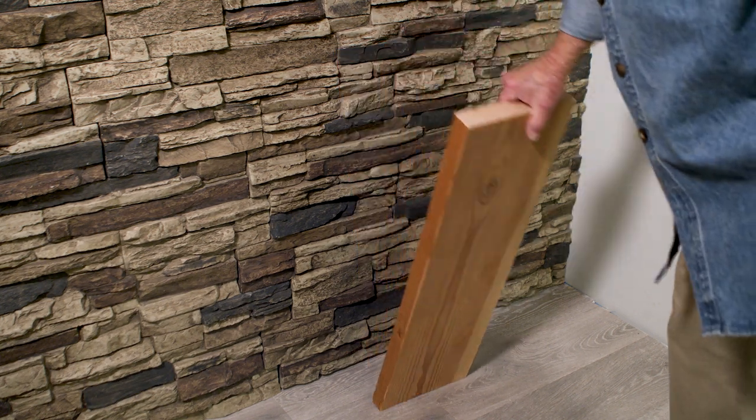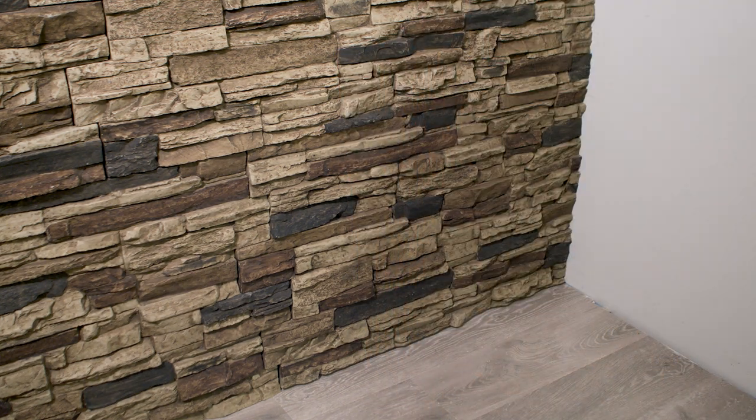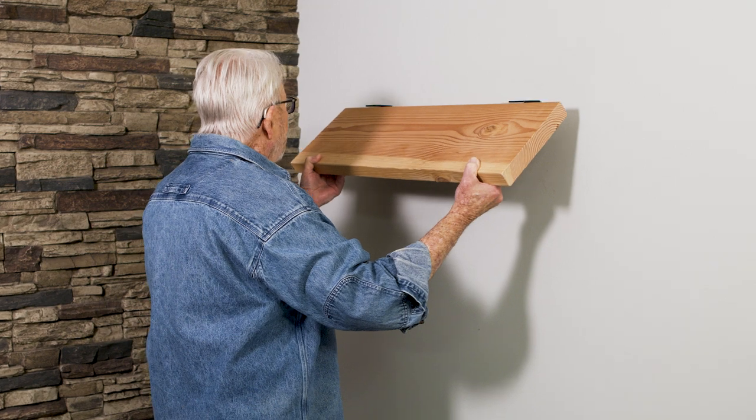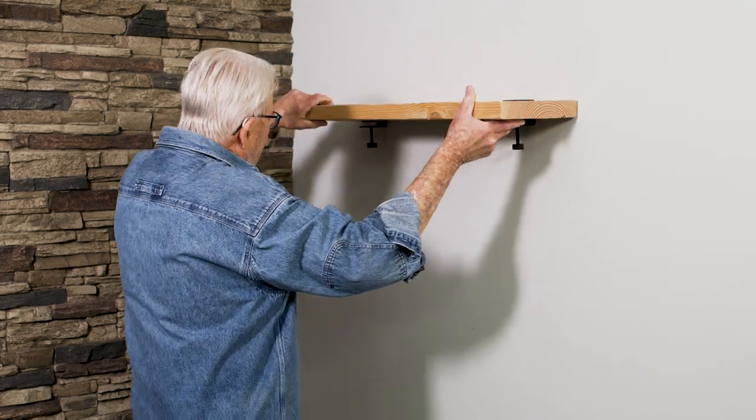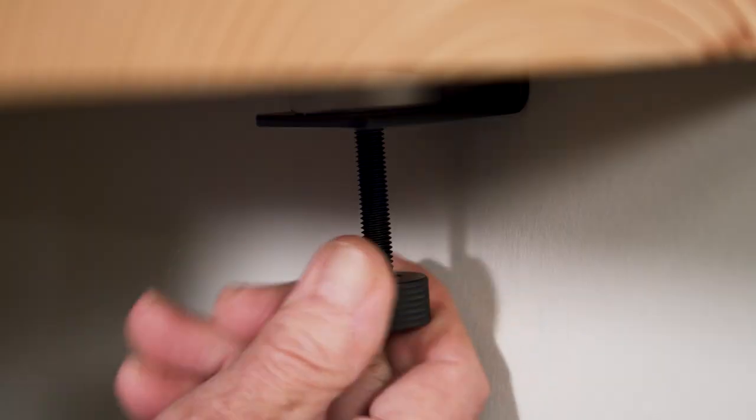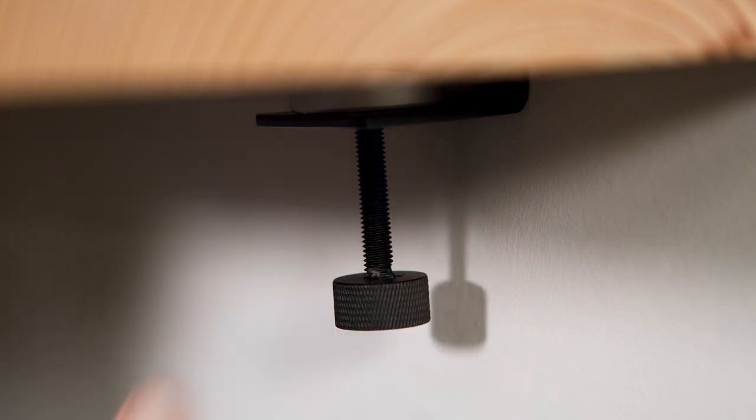For shelving material, I'm using standard 2x10 planks that I've cut to 30 inches in length. To secure them in place, I simply turn the knurled knob until everything is snug.